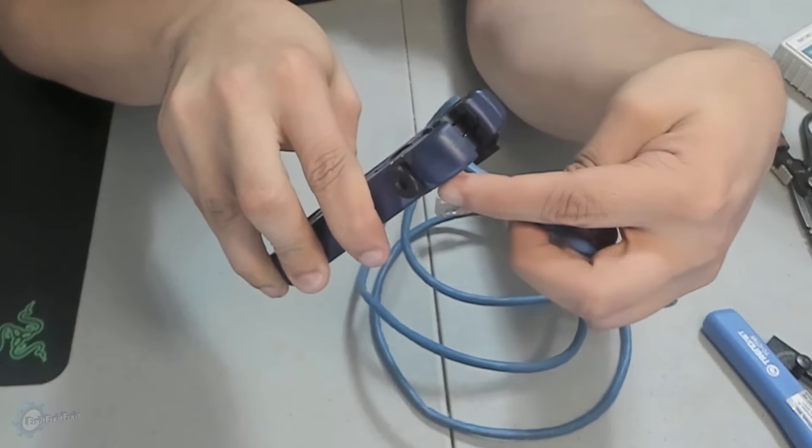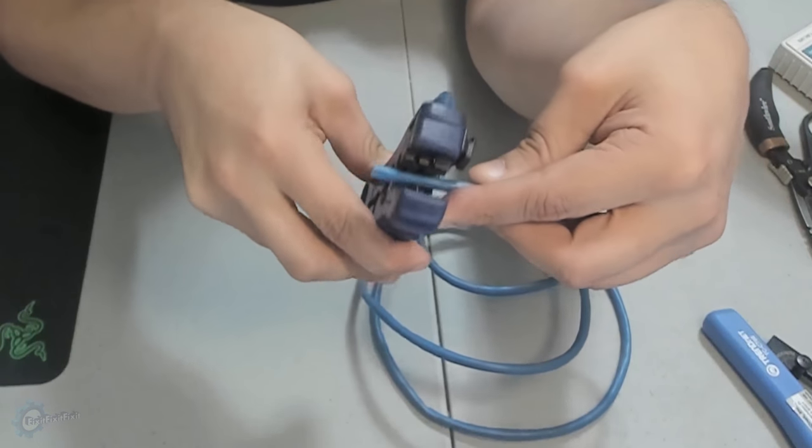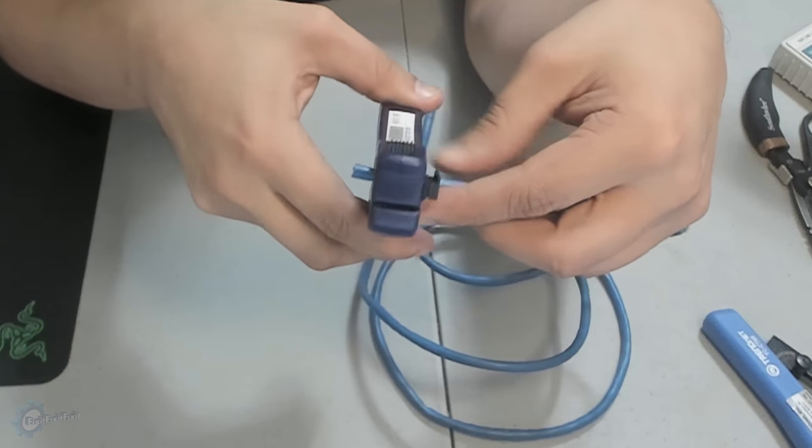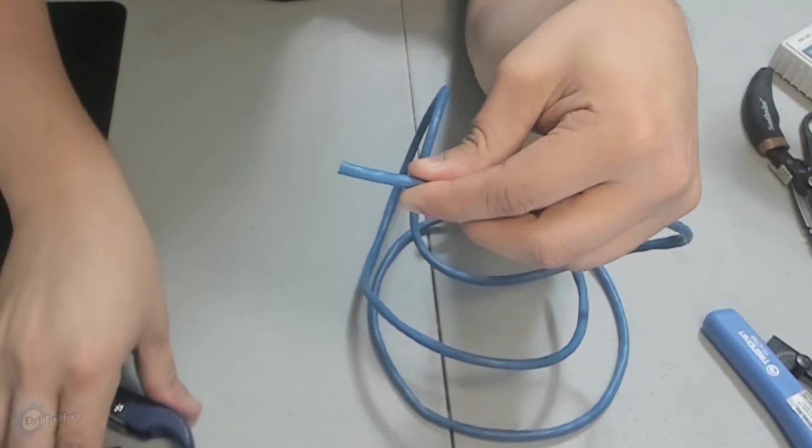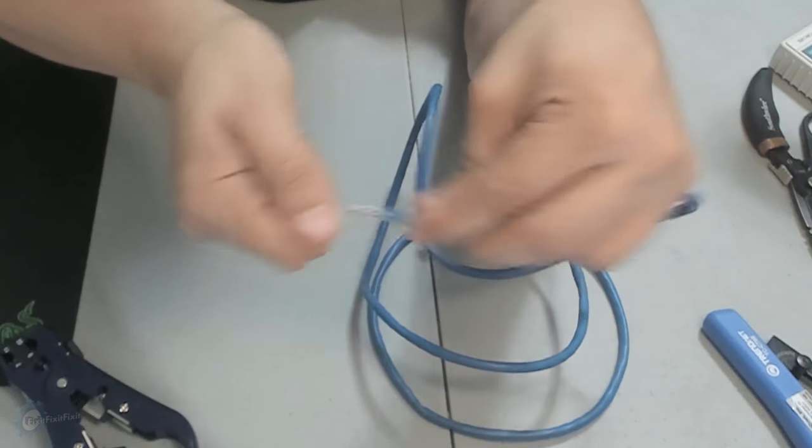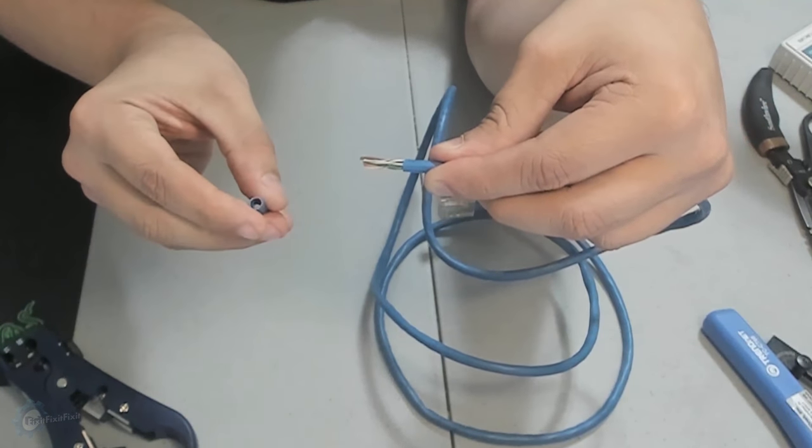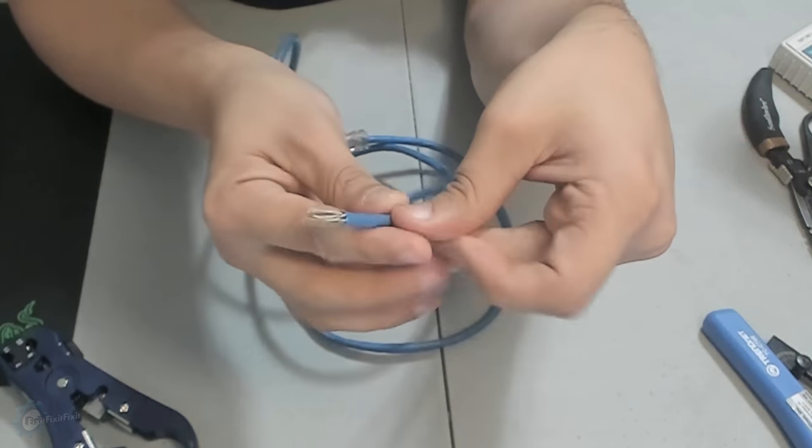The first thing you're going to want to do is put about an inch to an inch and a half of wire into the rotary cutting tool's groove and rotate the tool one revolution in order to cut the outer plastic shielding. You should now have eight exposed wires with different colors and patterns.